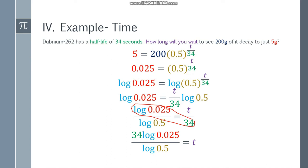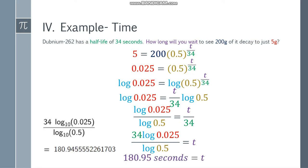Now you have to use a calculator. Input mo lang siya as is. And you will get an answer of 180.945 and so on, or 180.95 seconds. So mag-iintay ka ng 180.95 seconds para yung 200 grams mo ng Dubnium-262 na may half-life na 34 seconds, magiging 5 grams na lang.